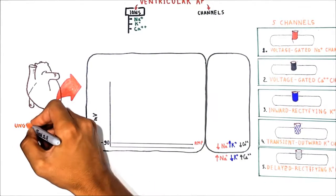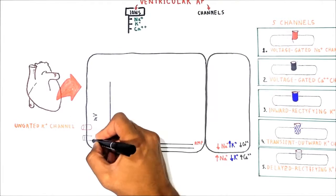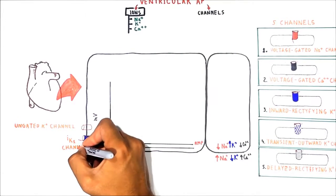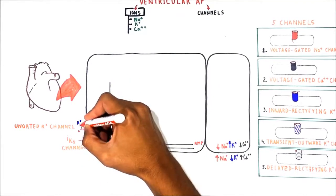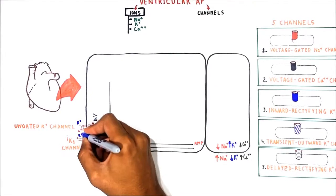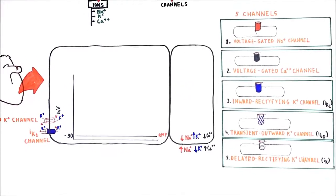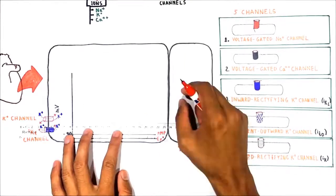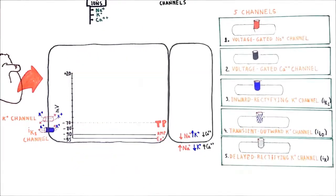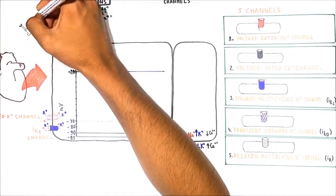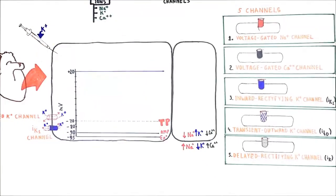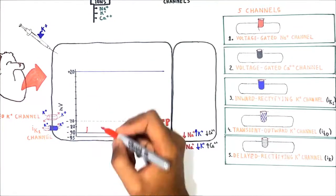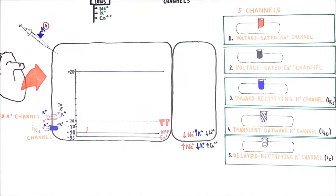Under resting conditions, potassium conductance in a cardiac myocyte is high, because two types of potassium channels are open: the inward rectifying potassium channel (IK1 channel). Both channels allow potassium to move freely across the cell membrane. Because of this, the resting membrane potential is close to the potassium equilibrium potential, which is approximately minus 95 millivolts. The threshold potential is around minus 70 millivolts. If I stimulate the cell by injecting potassium, the membrane potential becomes more positive.